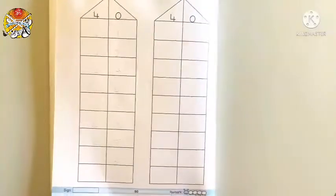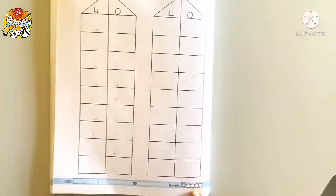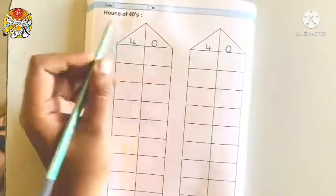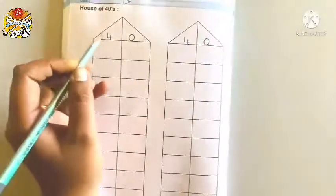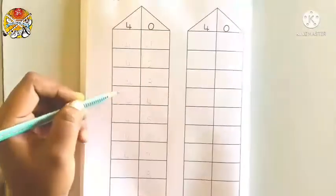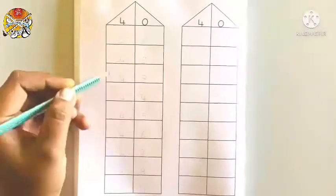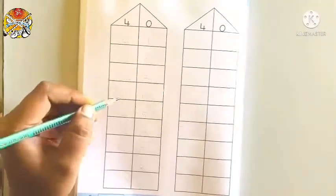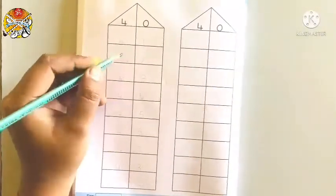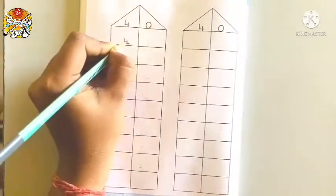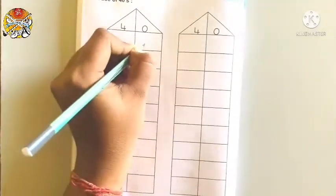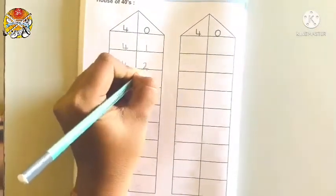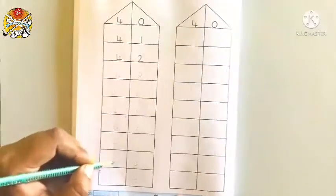And children in your number activity book open page number 90. See here also given house of 40's. You all can see here dotted numerals are given. So what you have to do? You have to trace these numerals. Like this: 41, 42. In this way you have to complete the house.